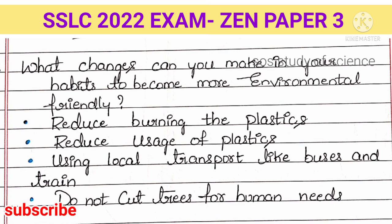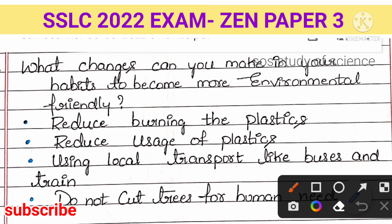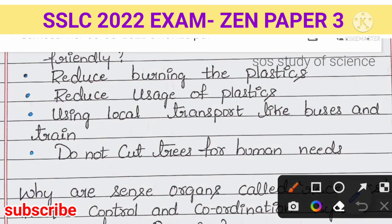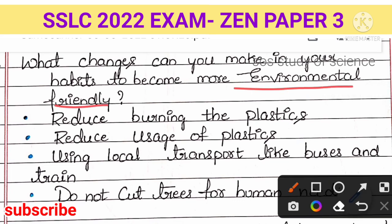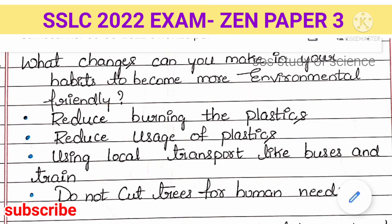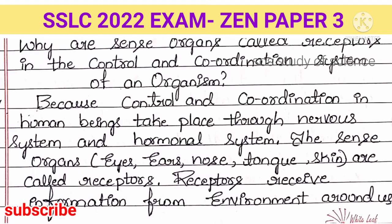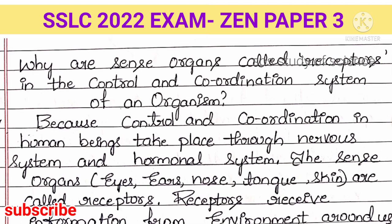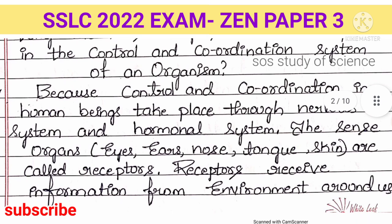Next two-mark question: what changes can you make in your habits to become more environment friendly? To reduce environmental pollution: reduce burning plastics, reduce usage of plastics, use local transport like buses and trains for distances where possible, and do not cut trees for human needs. These are some examples of habits that help humans become more environmentally friendly.